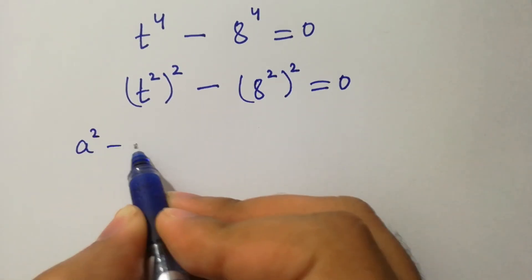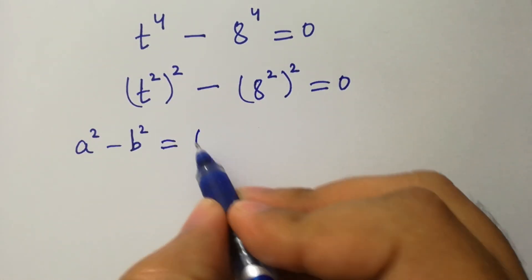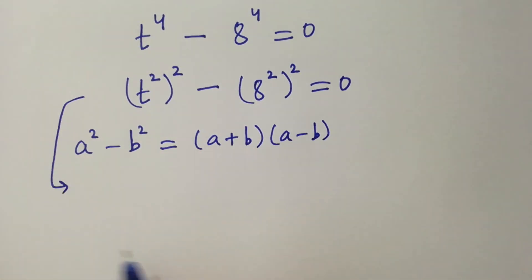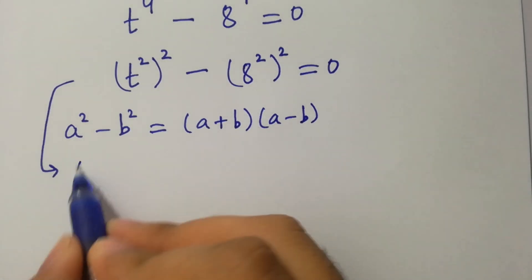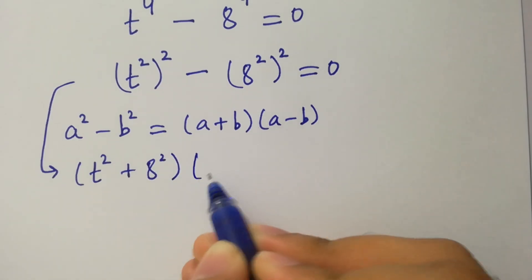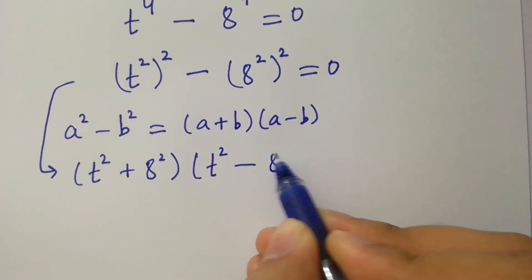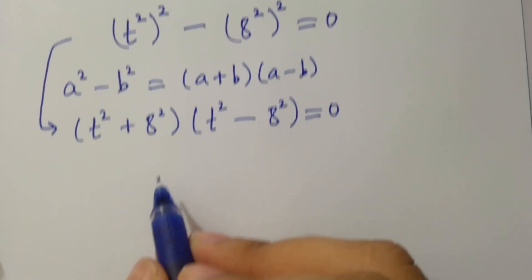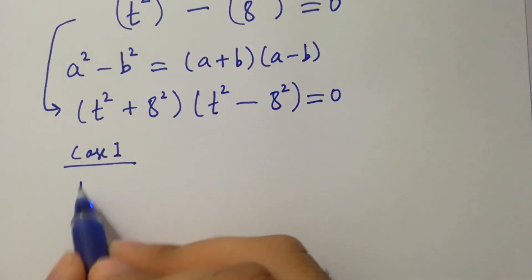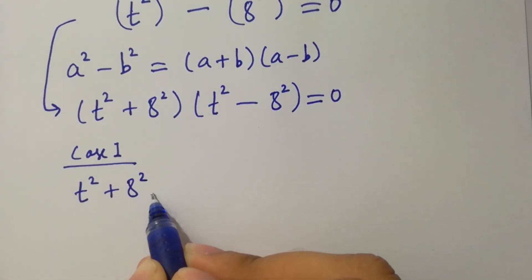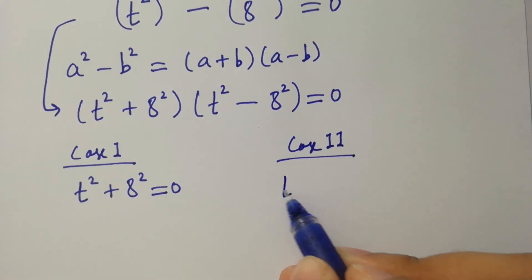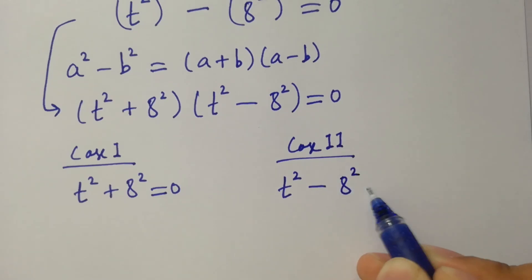By this, we will use the formula of a squared minus b squared, which equals a plus b times a minus b. We have t squared plus 8 squared times t squared minus 8 squared equal to 0. We have two cases: case one is t squared plus 8 squared equal to 0, and case two is t squared minus 8 squared equal to 0.